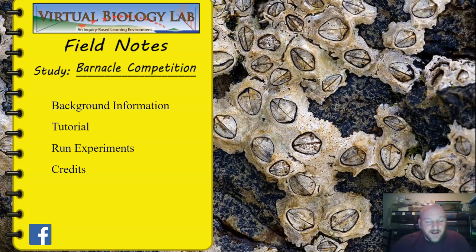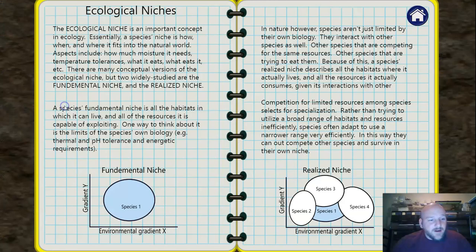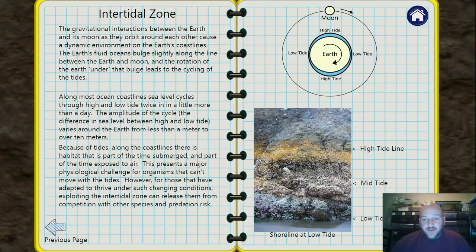There are several different things here. There are three main sections in addition to the credits there at the bottom. There is some background information on some really neat stuff. It's actually very well written and very clear background information talking about the ideas of a niche and how when you have multiple species they're competing over one another and that creates a little bit of a different environment.